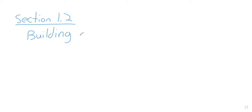Section 1.2 — I forget what the textbook calls it, but I call it building functions: taking simple functions and combining them to create more complicated functions. There are a few ways we can do this, and the simplest way is arithmetic. We can add, subtract, multiply, or divide functions.